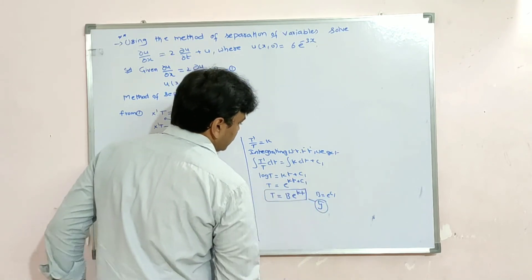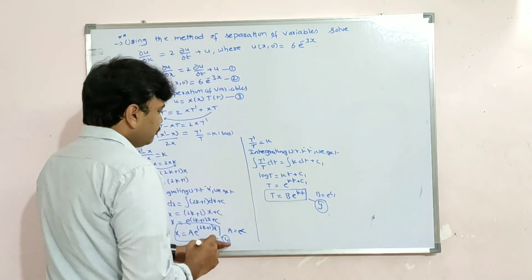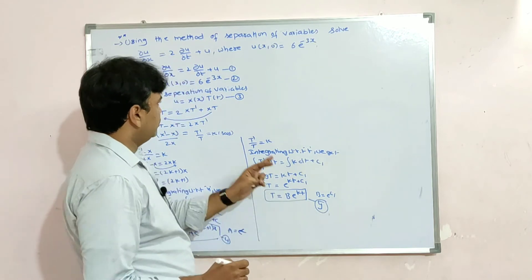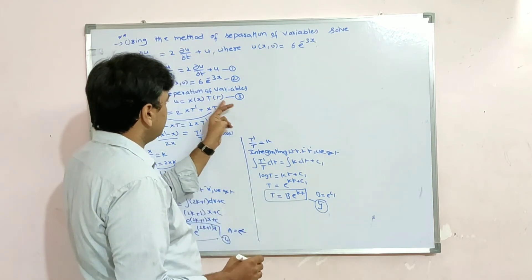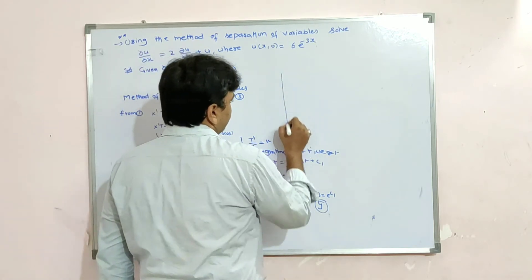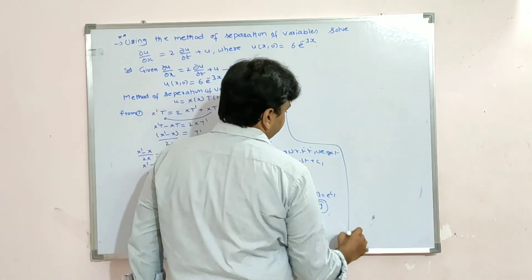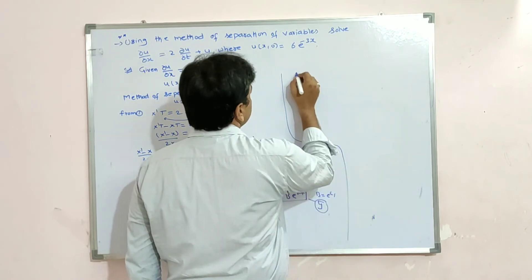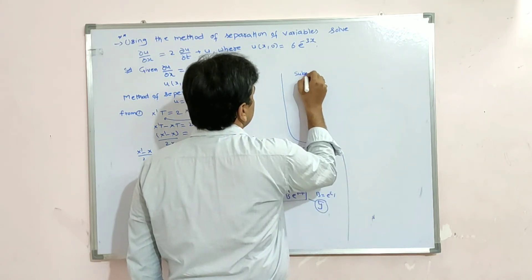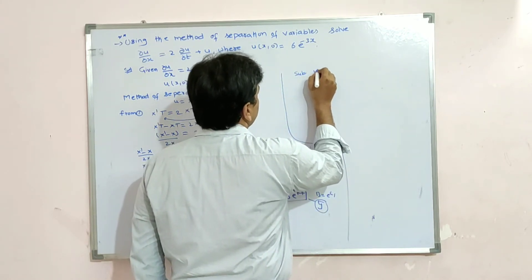Substituting X and T into u = X(x)·T(t), we get u = A·e^((2k+1)x) · B·e^(kt) = AB·e^((2k+1)x + kt).